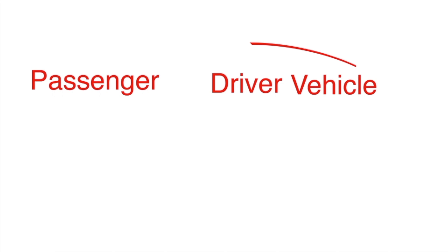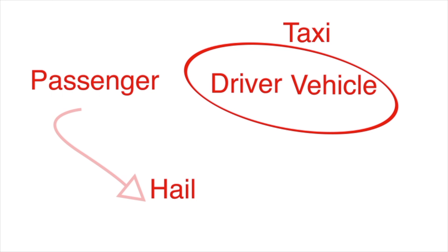Let's break down the entities that make up your system. You have a passenger, a driver, and some vehicle. The driver plus the vehicle make up the taxi. And then you have a hail, which is the request to be picked up. Once that request is accepted, you then have an order.